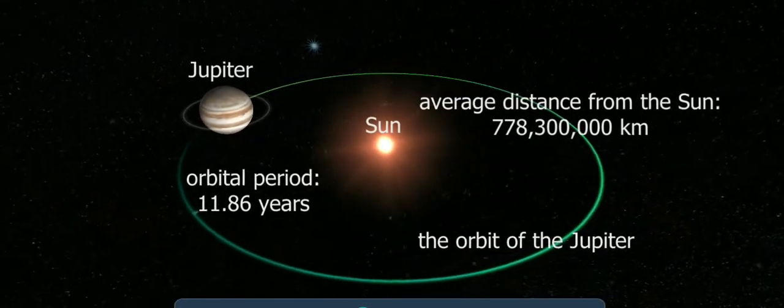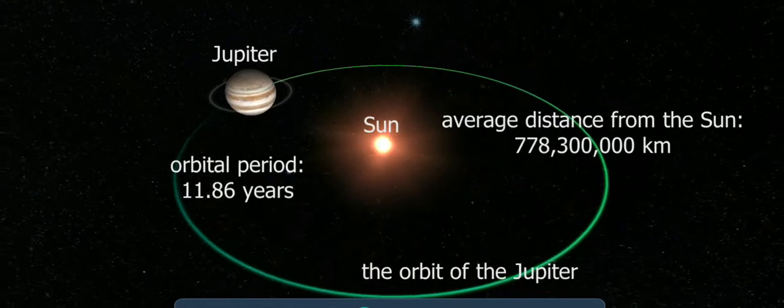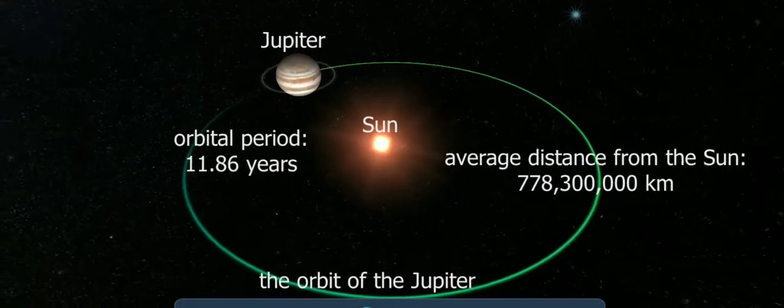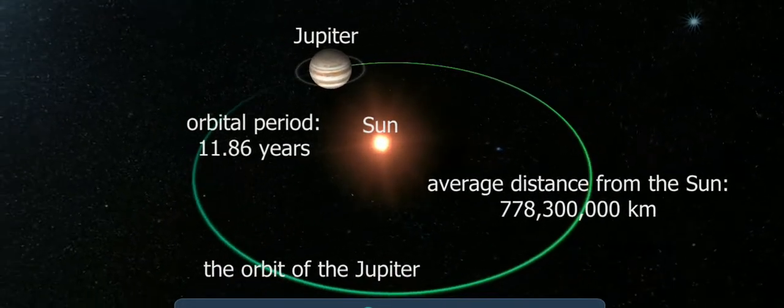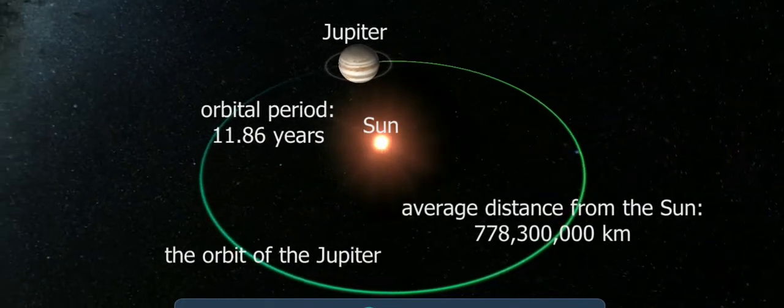The first mission to Jupiter was by the Pioneer 10 space probe in 1973. Jupiter has also been regularly observed by the Hubble Space Telescope.